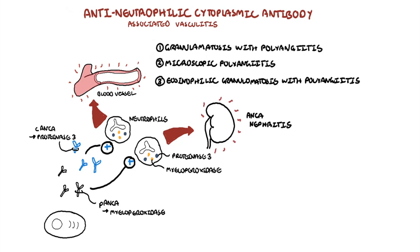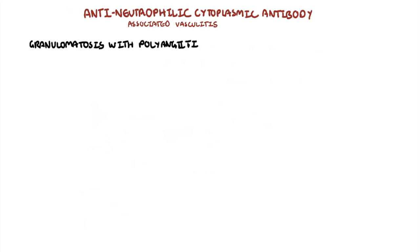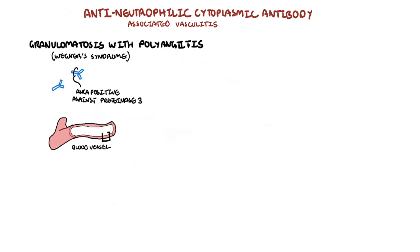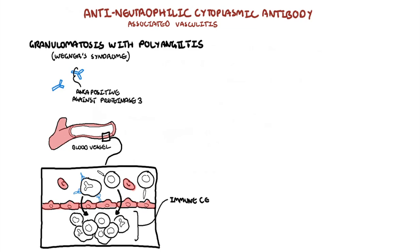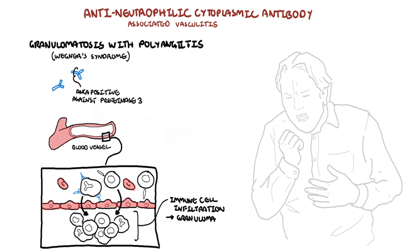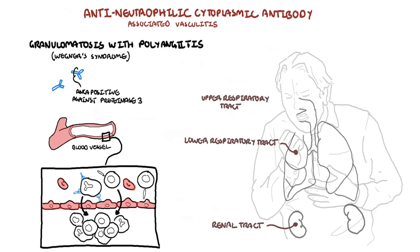Granulomatosis with polyangiitis, also known as Wegener's syndrome, is the most common ANCA-associated vasculitis, and more than 95% of patients are ANCA positive against proteinase 3. It is a small vessel vasculitis characterized by inflammation of the small blood vessels with infiltration of immune cells forming granulomas. The granulomas are formed by T-cells and other immune cells. Granulomatous inflammation occurs in the blood vessels of the upper respiratory tract, lower respiratory tract, and kidneys.